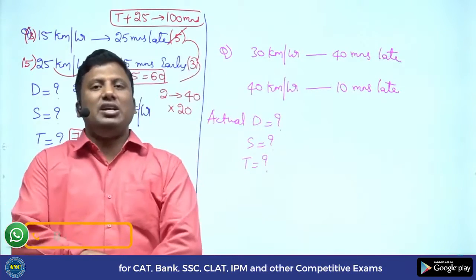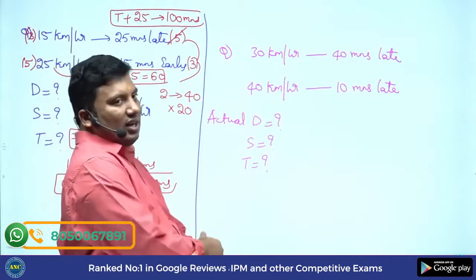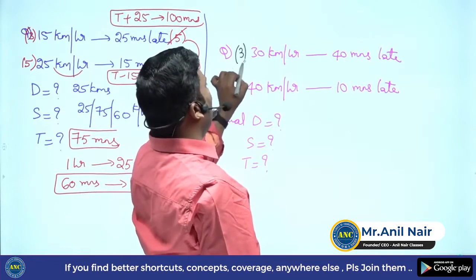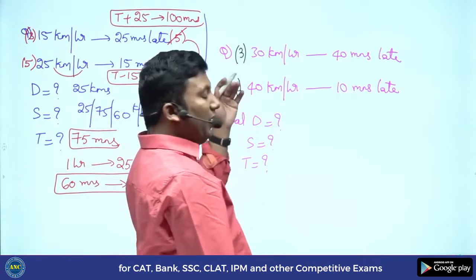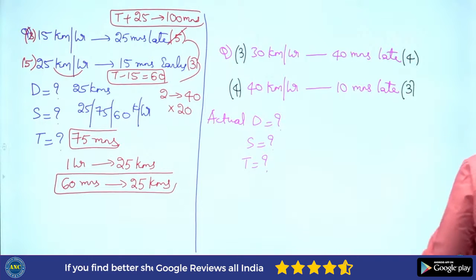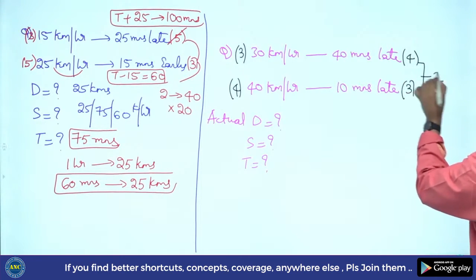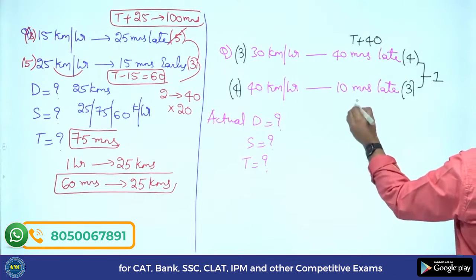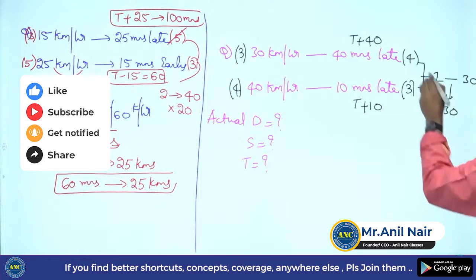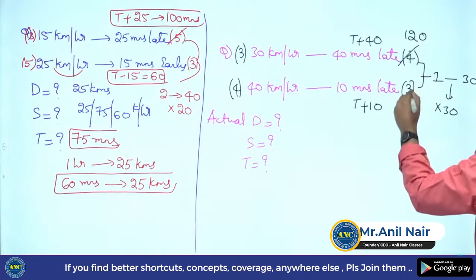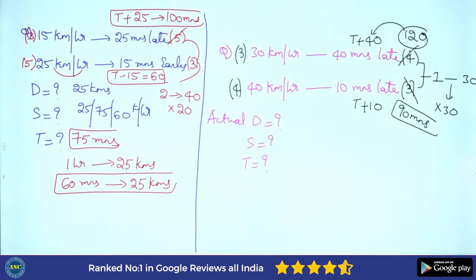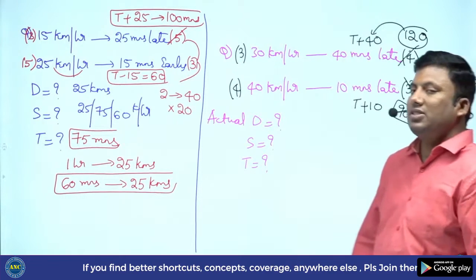The idea remains the same — that is the beauty of thematic-based learning. Speed ratio of 30 and 40: ten 3s are 30, ten 4s are 40 — speed ratio 3:4. Time ratio 4:3, difference is 1. According to the question: 40 minutes late and 10 minutes late, so difference is 30. Multiply by 30: 4×30 = 120 minutes, 3×30 = 90 minutes.